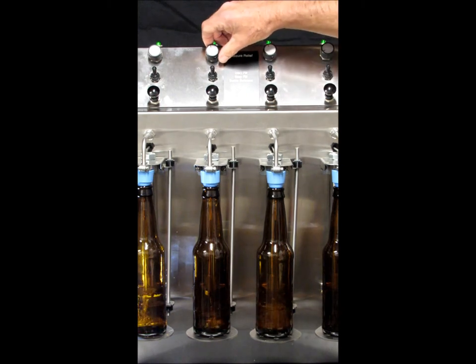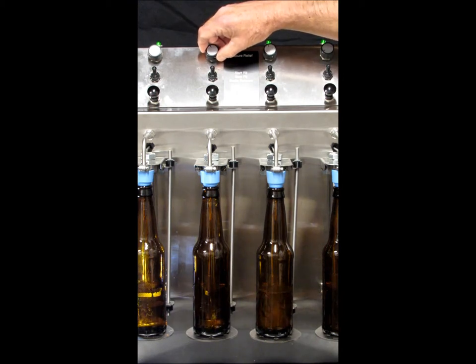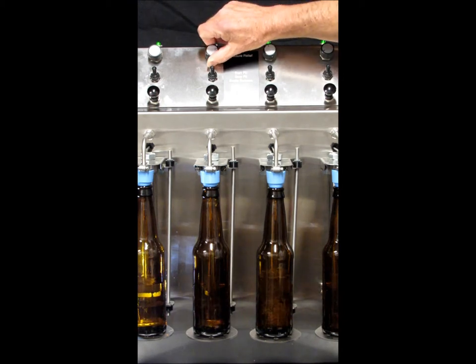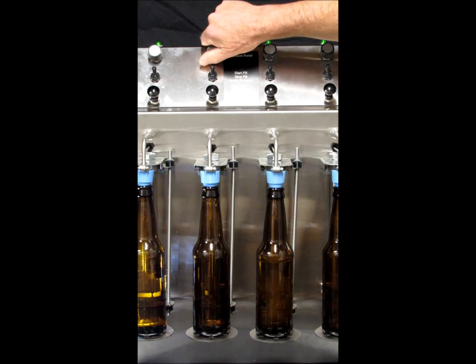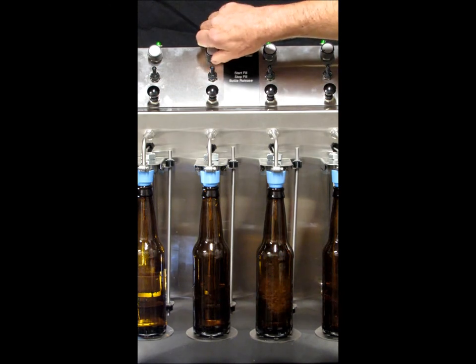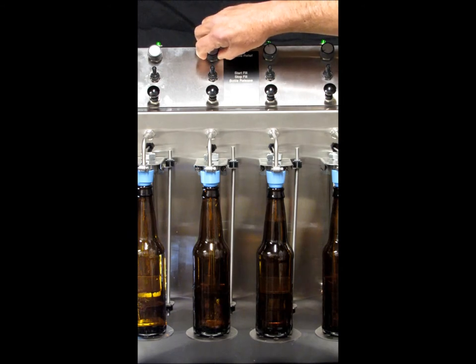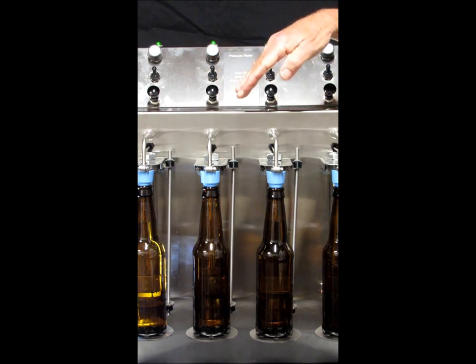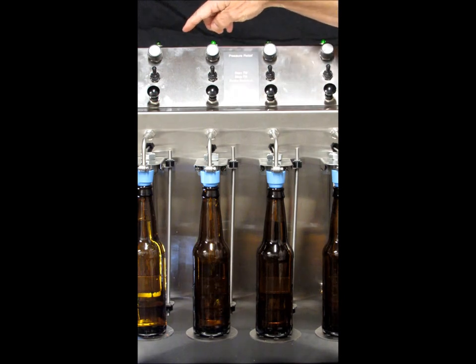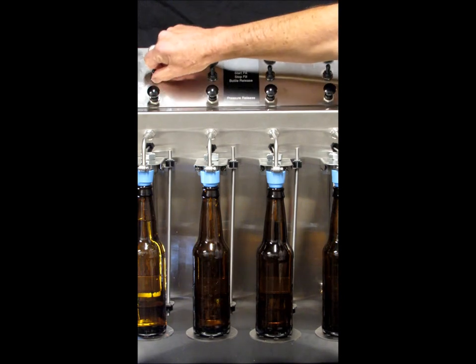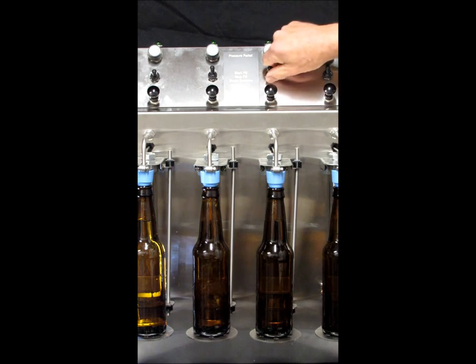And during the filling operation, the speed can be slowed down by turning clockwise. You can even stop the fill. Or you can speed it up by turning counter clockwise. And as it hits the sensor rod, the green light will go off. You flip the switch to the stop fill position.